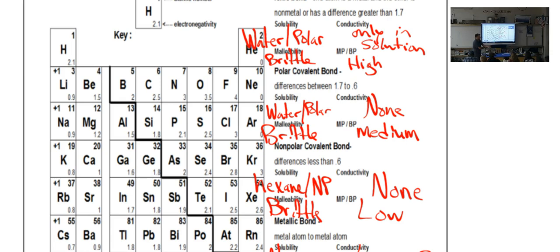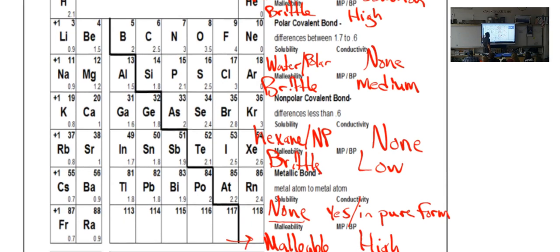For polar, it's also water-slash-polar. They do not conduct, so none. They are brittle, and they have a medium melting point and boiling point. Then, non-polar, that says hexane-slash-NP. That means hexane or non-polar substances. And then they don't conduct. They're brittle. They have the lowest.